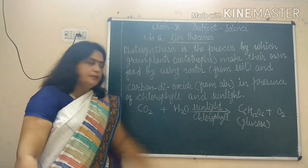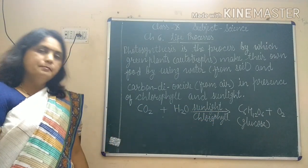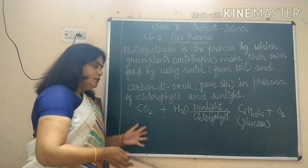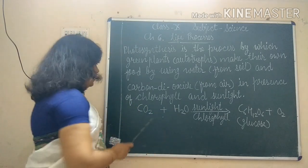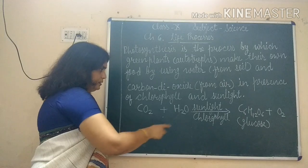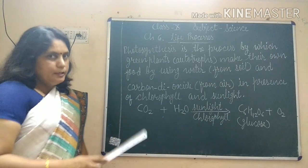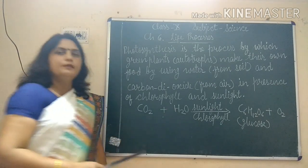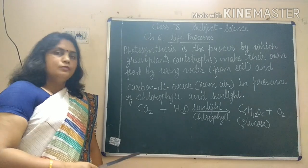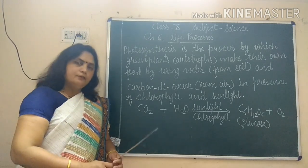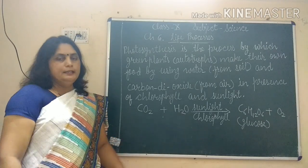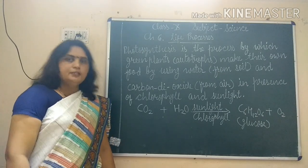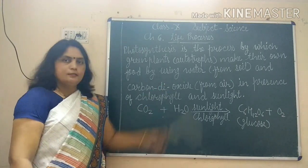They make their food in the form of glucose and oxygen is released as a byproduct. The four things necessary for this process are carbon dioxide, water, sunlight and chlorophyll. Without any one of these four, photosynthesis cannot take place. With the help of some experiments we are going to prove that these four things are essential for photosynthesis.